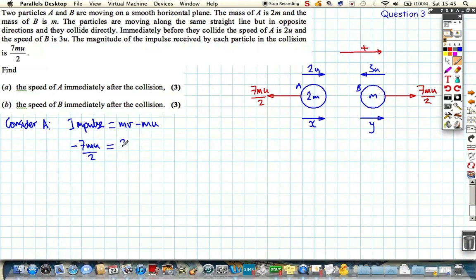So minus 7u equals 4x minus 8u. I've canceled m from each part and multiplied across by 2. Then rearranging all that, I find that u over 4 equals x. So the speed of A immediately after the collision is a quarter of u. It's a positive number, so it is acting to the right, but it's less than 2u which is being reduced, which is what we expect.